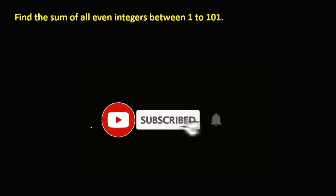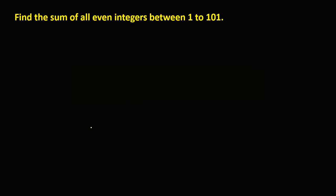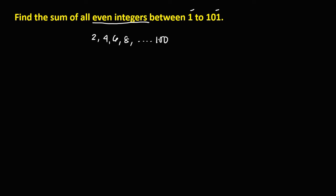Let's solve this problem: find the sum of all even integers between 1 and 101. Since all even integers are numbers divisible by 2, between 1 and 101 the sequence starts with 2, 4, 6, 8, and goes until 100.